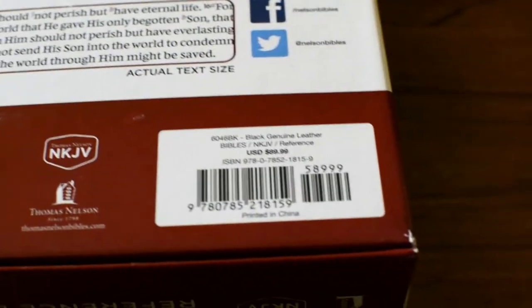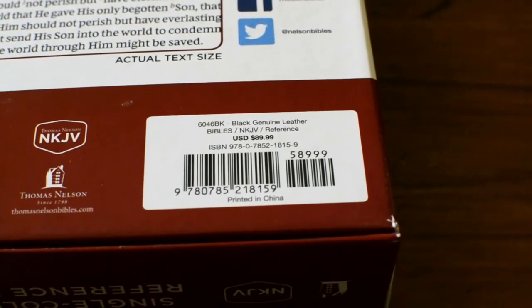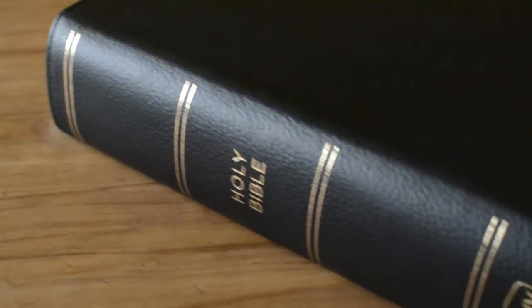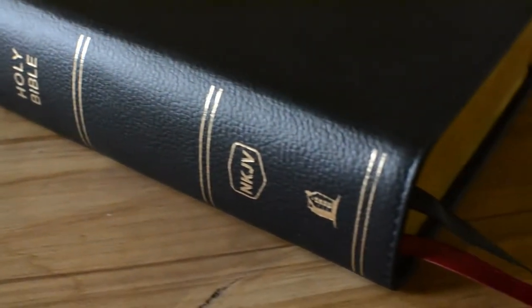This is the ISBN number. As you can see, it has a round spine with Holy Bible, the NKJV, and the Thomas Nelson logo. The cover has a little bit of grain and it's perimeter stitched, which is nice for not only aesthetics but also durability.